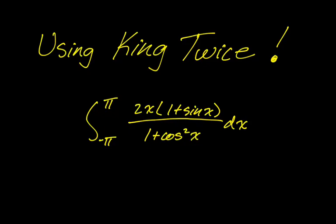In this video we're going to be doing the integral from negative pi to pi of 2x times the quantity 1 plus sine of x over 1 plus cosine squared of x dx. This is a problem where you're going to have to use the King procedure twice, which is really neat — kind of like integration by parts where occasionally you'll need to use the procedure twice.